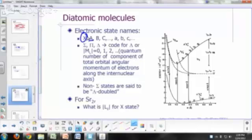The first excited state with the same multiplicity as the X state is called A, and then the next one is B, and then the next one is C, and so on.